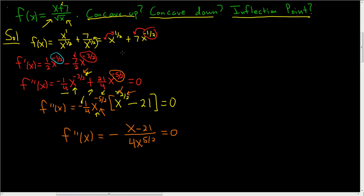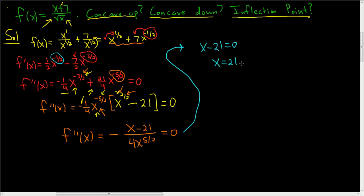This problem becomes much harder if you don't simplify first — it becomes a huge mess. We have a fraction equal to zero with no common factors, so we set the numerator equal to zero and get x equals twenty-one. This might lead to an inflection point, but we don't know — we have to check.